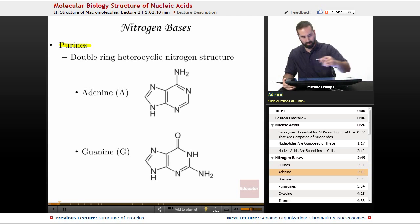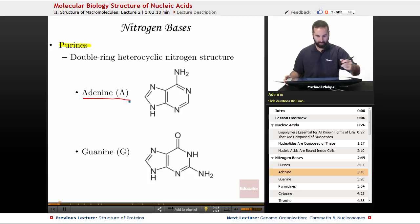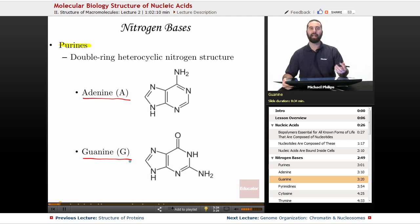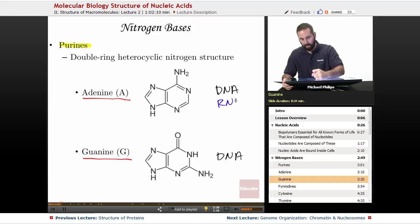We have adenine. Adenine is our A. And we have guanine, our G. So adenine and guanine are both going to be able to be found in DNA, and they'll both be found in RNA.